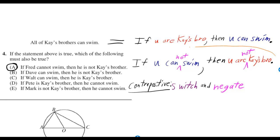So if this contrapositive must be true, then it must work for any person. So if Fred cannot swim, then he is not K's bro.